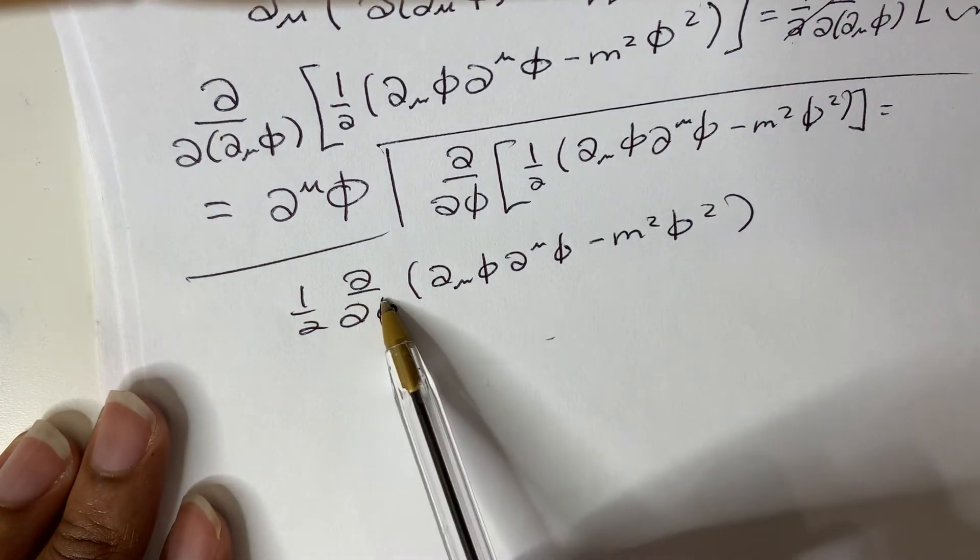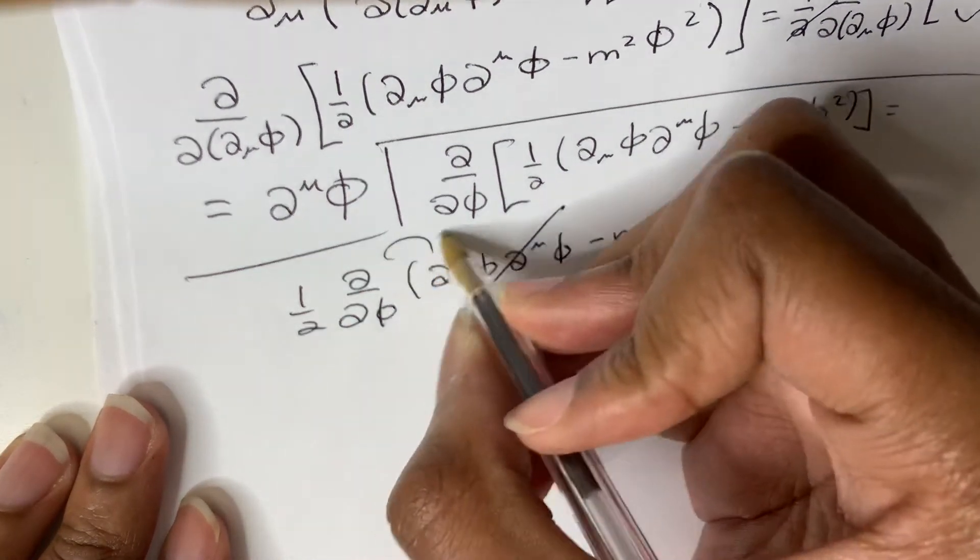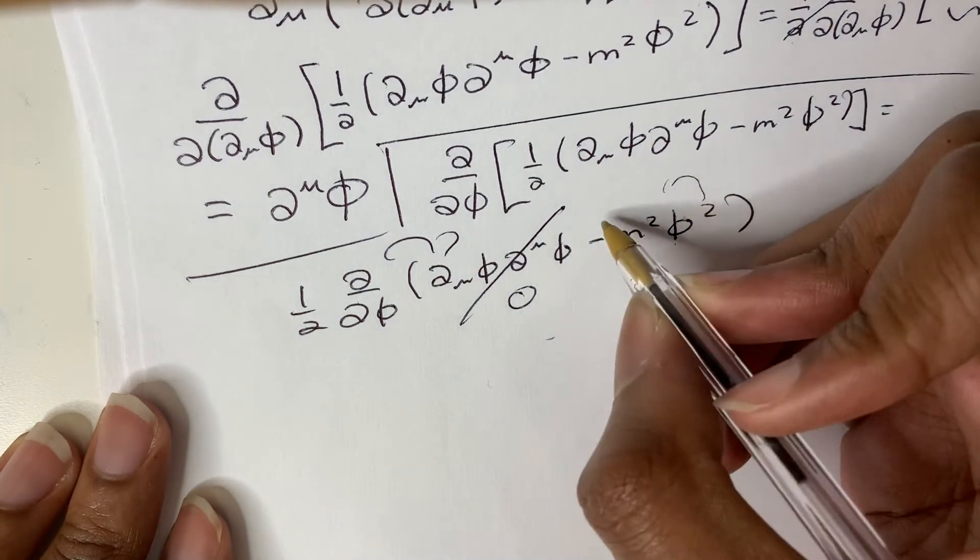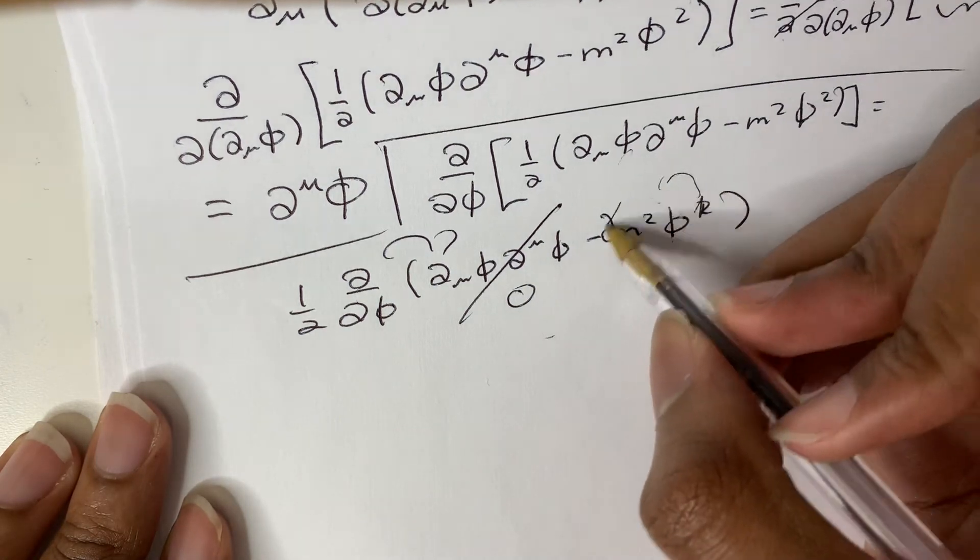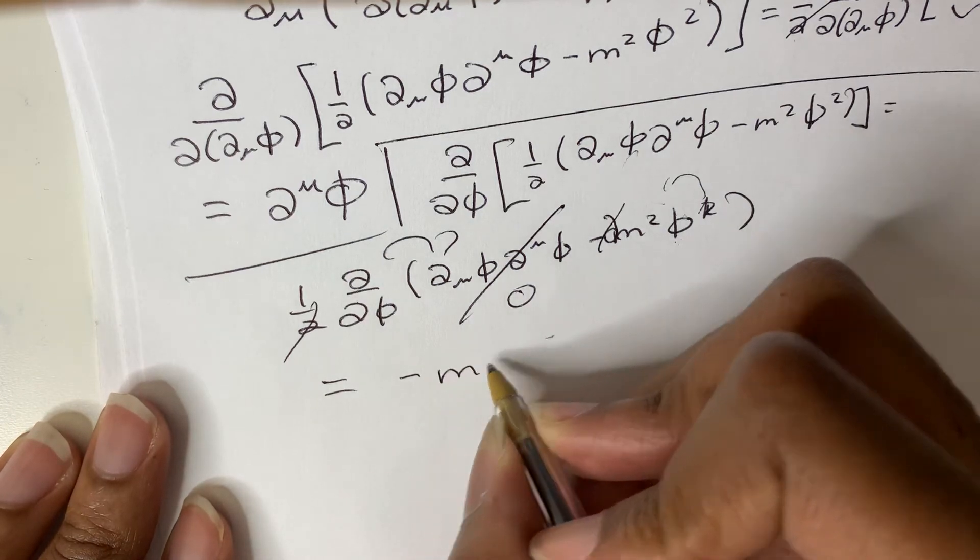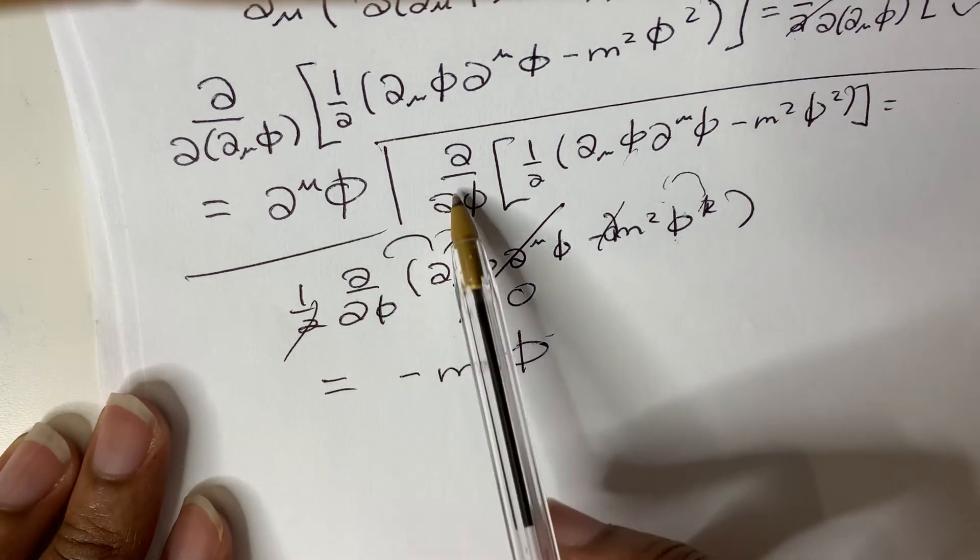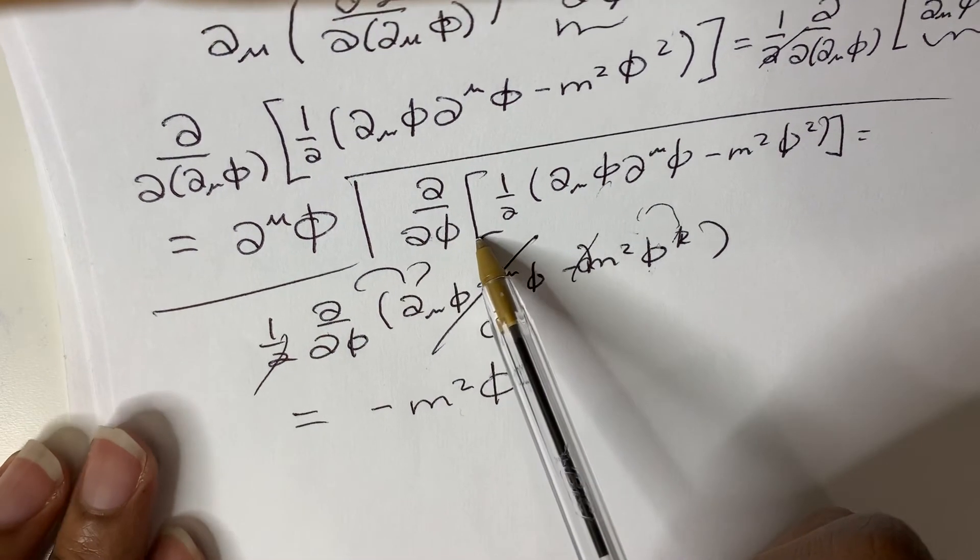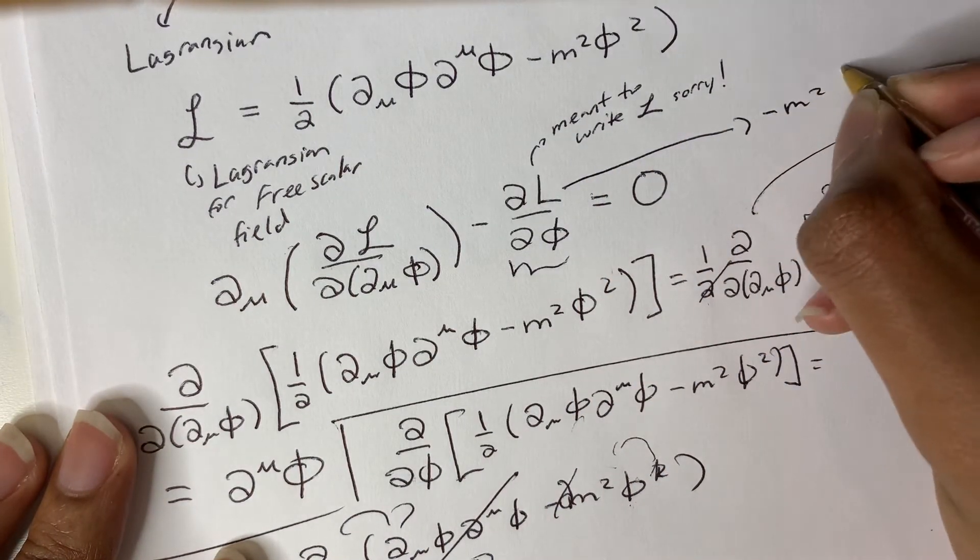So this is really with respect to phi. There's no phi term here, just derivatives of phi. This goes to 0 with this derivative. And we have a phi term here. So this is going to be 2 times this, and this is raised to the first power. The 2 will cross-cancel with the 2 over here. And we are going to have minus m squared phi. So this term is minus m squared phi.